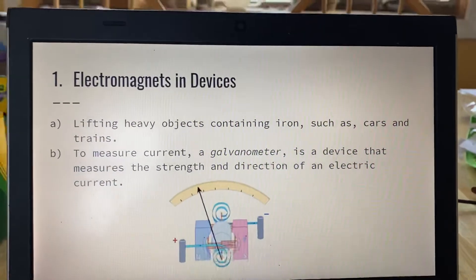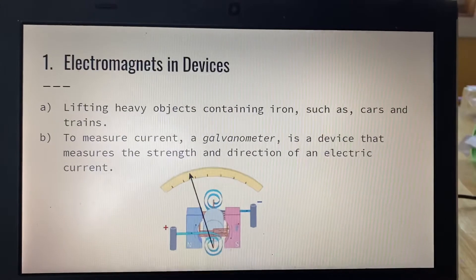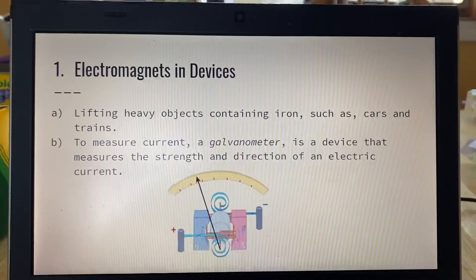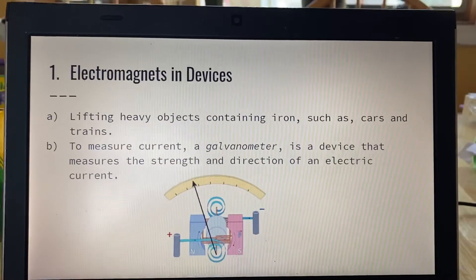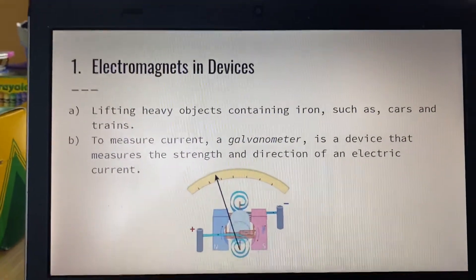So uses for electromagnets, which is your aim. Magnets in devices: lifting heavy objects containing iron, such as cars and trains. In a scrapyard, when you need to move around old junk cars, you can use electromagnets, or trains that no longer function.